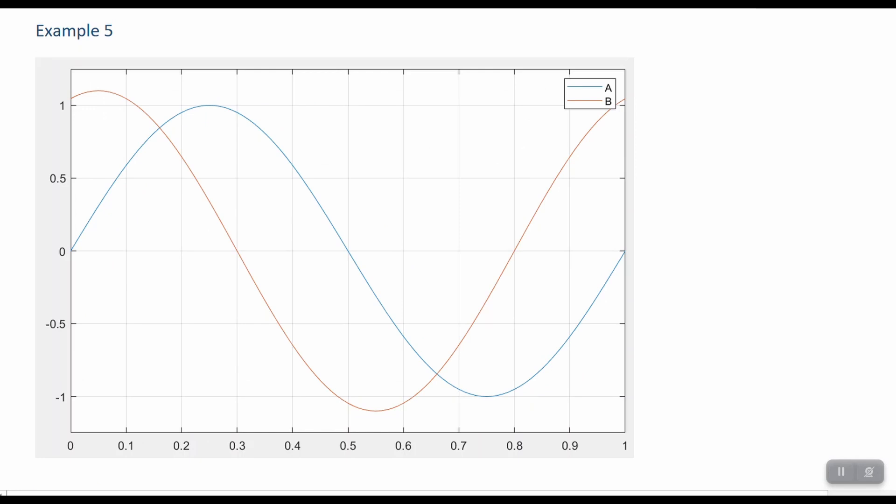Okay, and this example here looks like B is leading A by a certain amount. And one thing I need to point out on here is that we're no longer looking at degrees along the x-axis. This is actually in time, in seconds. So we need to take that into account when we're calculating what the actual phase shift is between the two of these.